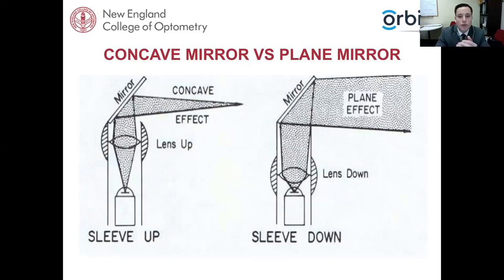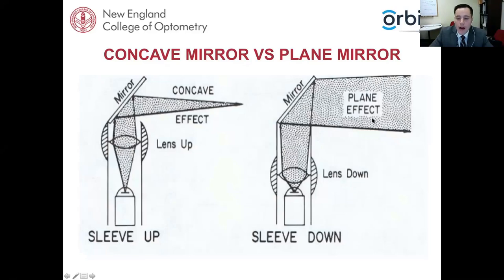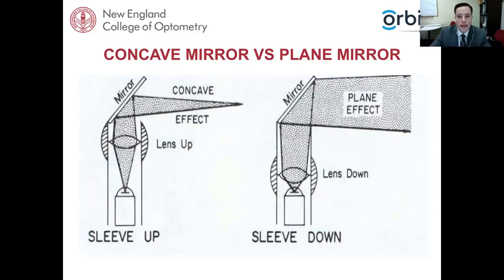Many people like concave mirror, especially with high myopes. The reality is they are equal in technique — it's what you feel more comfortable with, not necessarily about accuracy. Concave mirror is when you have the sleeve up, so the light coming out of the retinoscope is converging, and the motion you see is opposite to what you may be used to with plane mirror. With plane mirror and sleeve down, the light is diverging, and motion on the retina is the same as you see it. Neutrality is neutrality regardless of sleeve position.